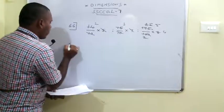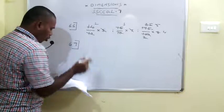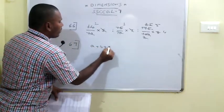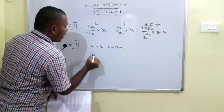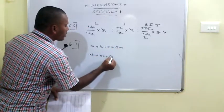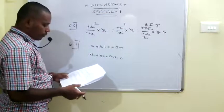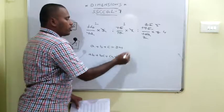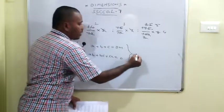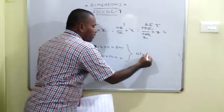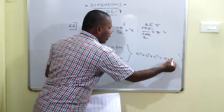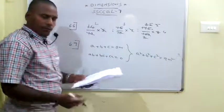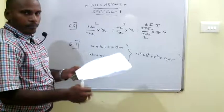The 67th problem: The mean of A, B and C is M, so their sum is 3M. Also, AB + BC + CA = 0. Squaring the first equation: (A + B + C)² = 9M², which expands to A² + B² + C² + 2(AB + BC + CA) = 9M². Since AB + BC + CA = 0, we get A² + B² + C² = 9M², so their mean is 3M².